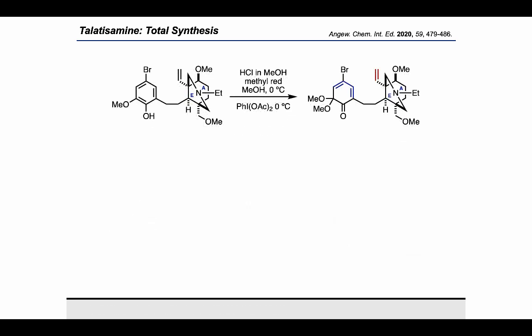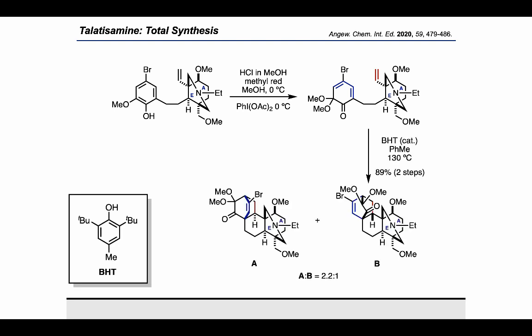To carry out the Diels-Alder step proposed during the retrosynthesis, they used HCl to keep the amine protonated, while diacetoxy-iodobenzene (phenyl iodine diacetate, or PIDA) was used to carry out an oxidative dearomatization to give the dienone intermediate. This was then heated to carry out the intramolecular Diels-Alder reaction, resulting in a diastereomeric mixture of products. It is worth noting that using the same approach without the bromine on the substrate was significantly less successful, as the authors proposed that an intermolecular dimerization process is more competitive when bromine is not present.